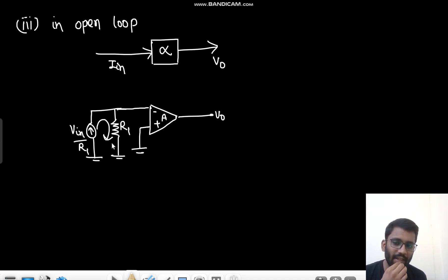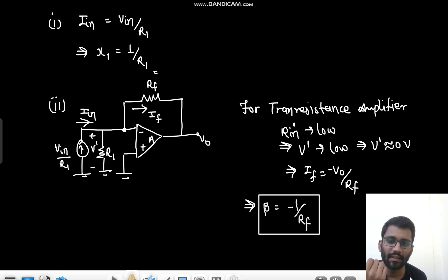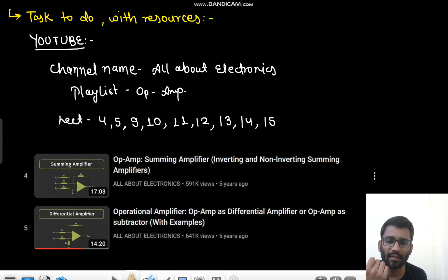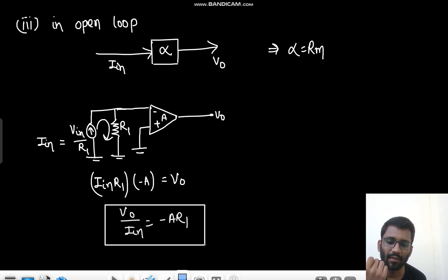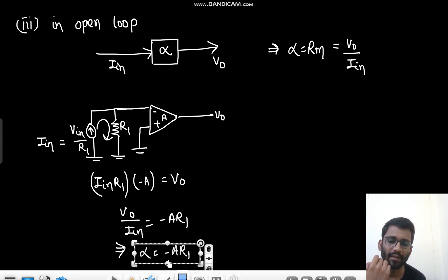This is V in by R1. V in by R1, and this is also V in by R1. Now this complete V in by R1 current will flow from this resistance only. And this is your A. So basically this complete current will flow from this resistance only. V in by R1, V in by R1 is I in. Here what is alpha? Alpha is Rm only. If you compare it with this, this alpha is Rm only. So your I in into R1 into minus A is equals to V0. So what is your V0 by I in? That is minus A into R1. That means alpha is Rm. What is that? V0 by I in. That means your Rm is, alpha is minus A into R1.